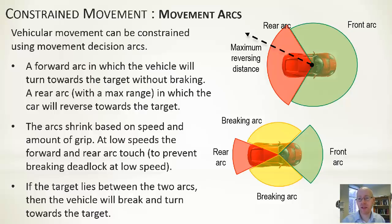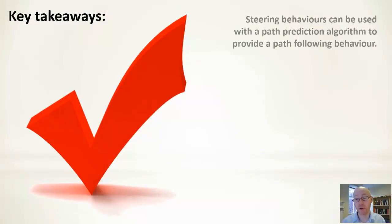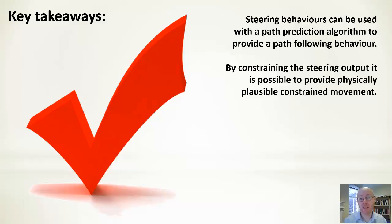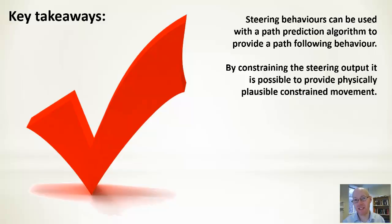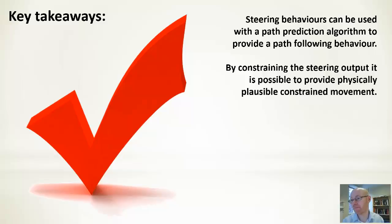Overall, the key takeaways are: steering behaviours can be combined with a path prediction algorithm to provide path following behaviour, using seek with a little path prediction to move along a given path. By constraining the steering output it is possible to provide physically plausible constrained movement, simulating a car or motorbike moving as it would in the real world. Steering behaviours are very flexible — we've touched on quite a few possibilities but are only scratching the surface of their full extent.